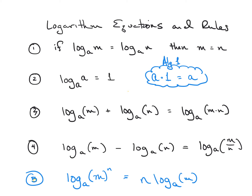Rule five: log base A of M to the N. If you take the logarithm of something with an exponent, you get to remove the exponent because a logarithm undoes exponential problems. For our video we're going to have to go the opposite way — from N·log_A(M) back to log_A(M^N) — because we need to get back to rule one. Pause the screen and write all these rules down before we start the first example.